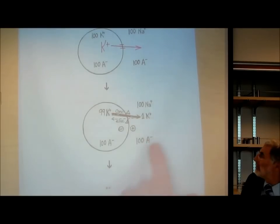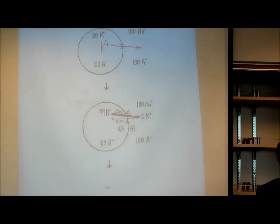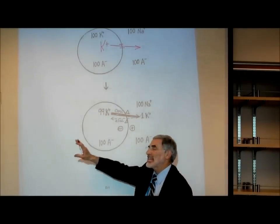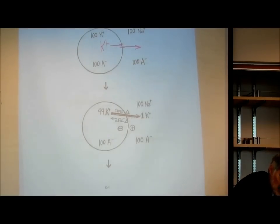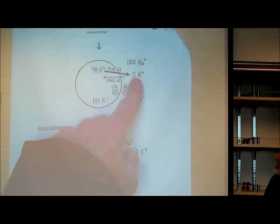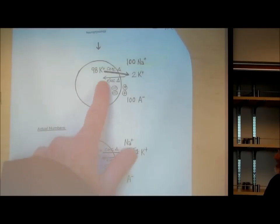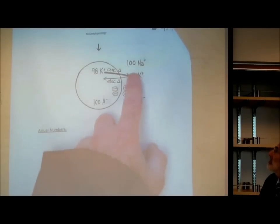On the outside, we had 100 positive charged sodiums and now we've got one positive charged potassium — a total of 101 positive charges but only 100 negative charges. The outside is now positive. That's what creates the electrical polarity. There's still a concentration gradient — 99 potassiums inside and only one outside — so another potassium is going to flow out.